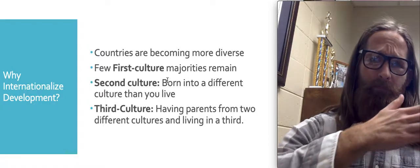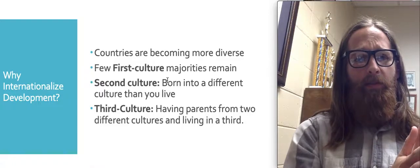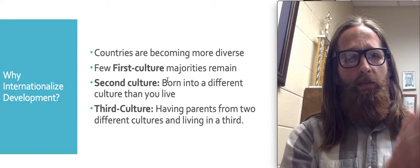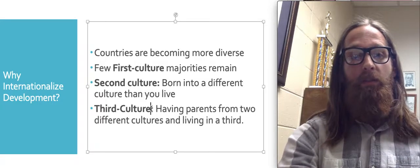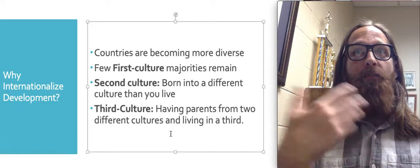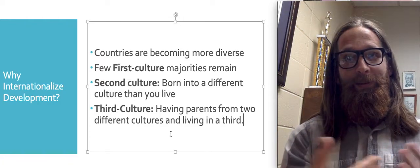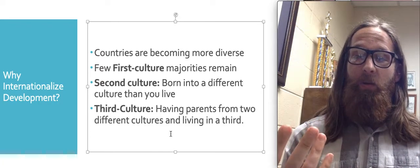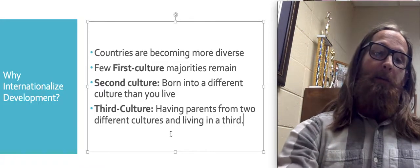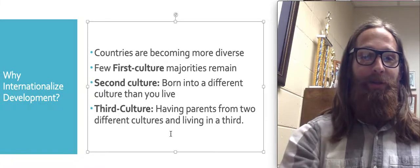Second culture people are ones that are born in one culture and move, migrate, or emigrate to another, so they now live in a culture they weren't born into. Third culture is relatively new but increasingly common — people born into one culture with parents representing more than one culture, and sometimes they move to yet another. There can be as many as four different cultures someone has been born into or is now living in. So to which culture do they belong, which one do they learn about, which one do they practice?